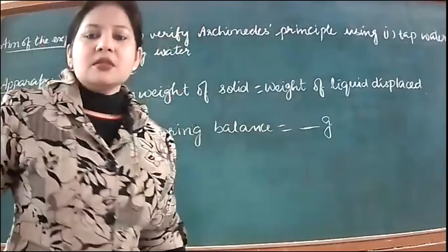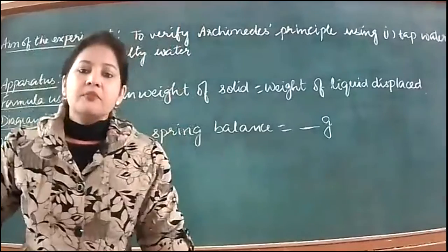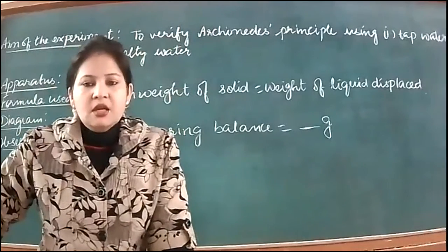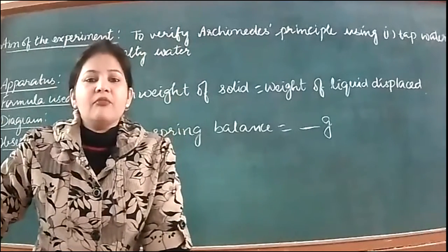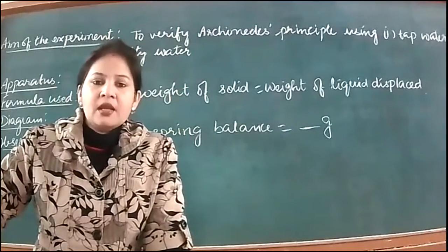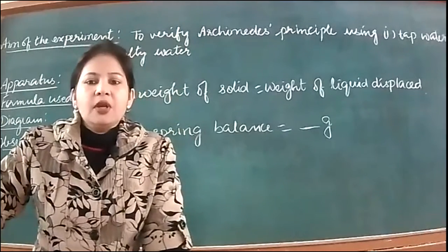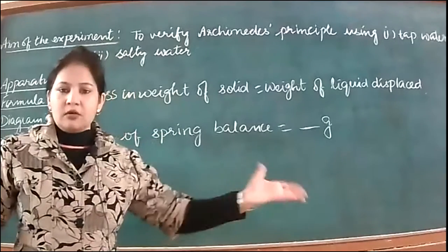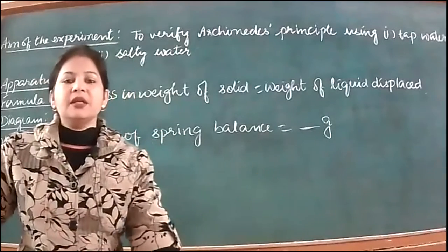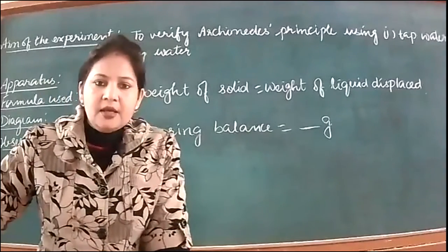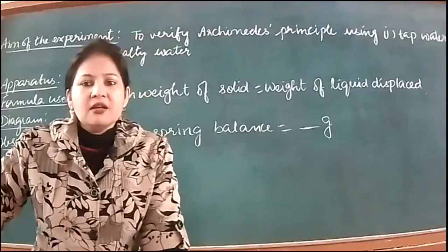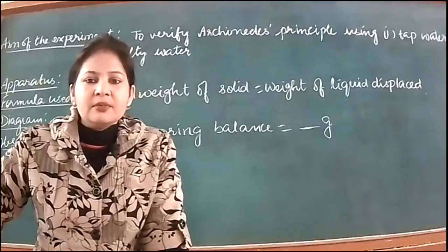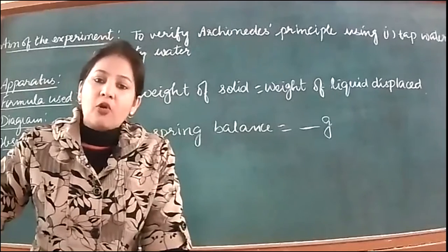The five points are: aim, apparatus, theory, procedure, and precautions. In theory, you will state the law — give the statement of the law and that becomes the theory. Whatever we do will be the procedure.